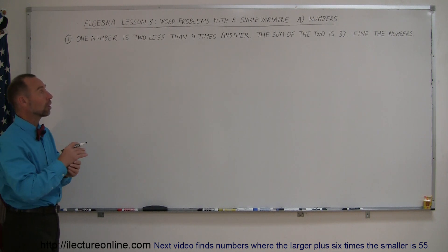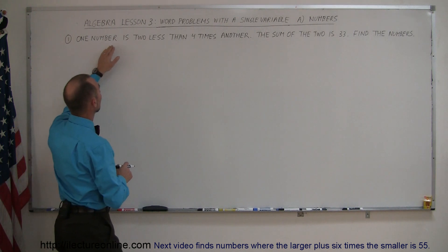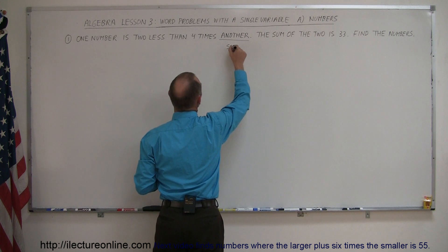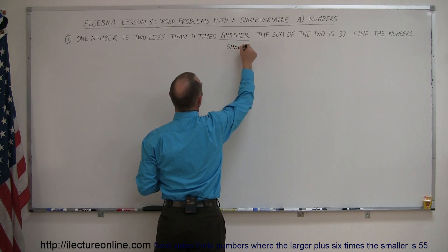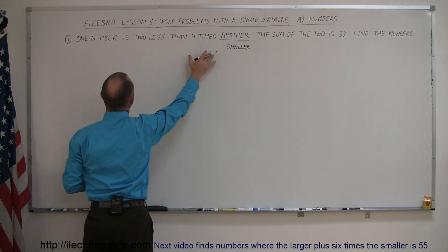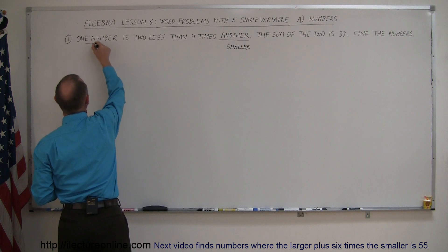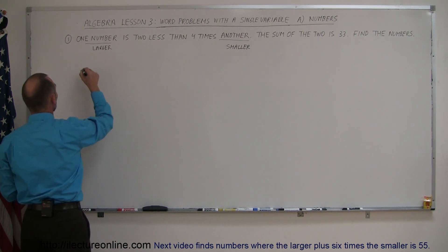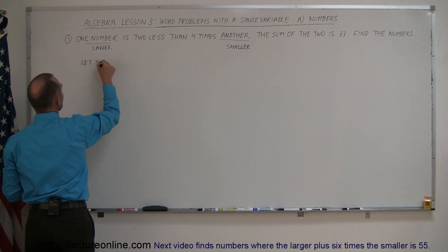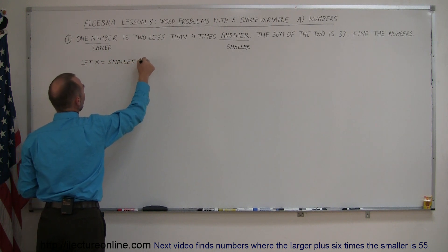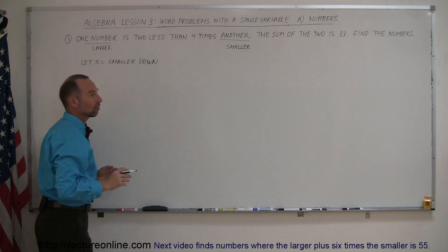We're going to express them in terms of x. Typically, you let x be the smaller of the two numbers. We have one number which is two less than four times another number. So this other number, this would be the smaller number. And then the one that is four times the smaller number, but two less than that, that would probably be the larger number. Typically, you're going to let x equal the smaller number, and it's always a good idea to write that down.